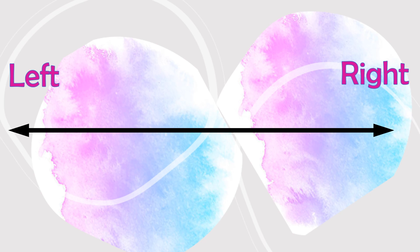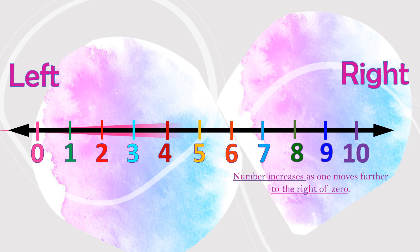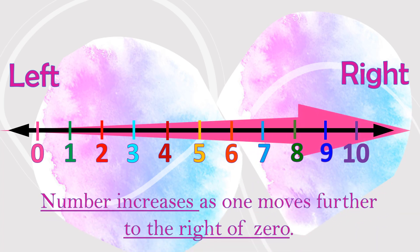Let's try to pin the numbers on the number line. We start from 0, then we count on from 1 to 10: 1, 2, 3, 4, 5, 6, 7, 8, 9, 10. So you see, the number increases as one moves to the right of 0.